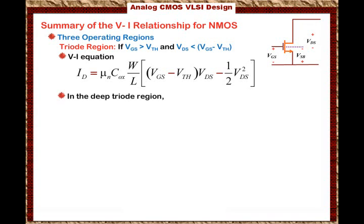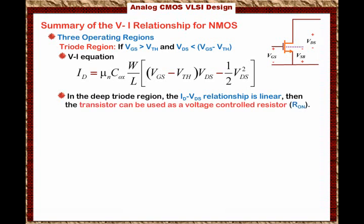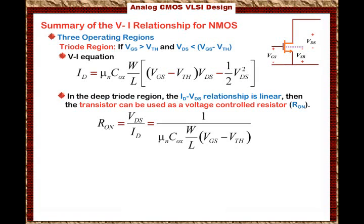In the deep triode region, the ID relationship is linear, meaning the transistor can be used as a voltage-controlled resistor, which we call RON. RON is defined as VDS / ID, which equals 1 / [μN·COX·(W/L)·(VGS − Vth)]. This is a very important feature of the NMOS transistor — using it as a voltage-controlled resistor.